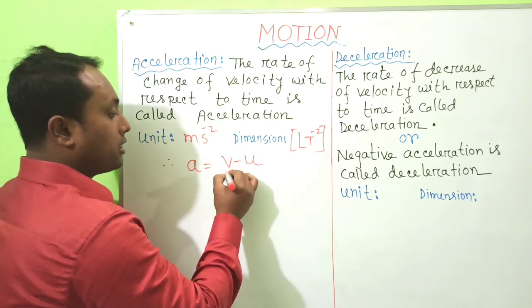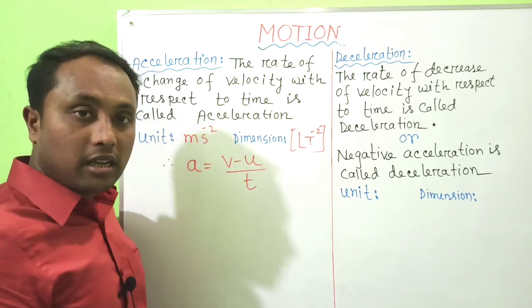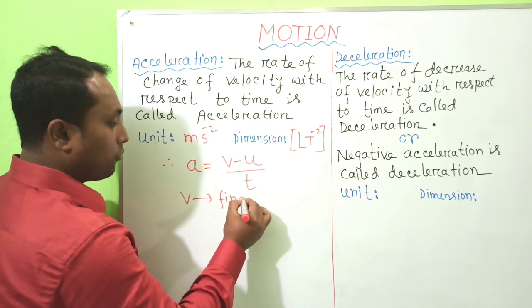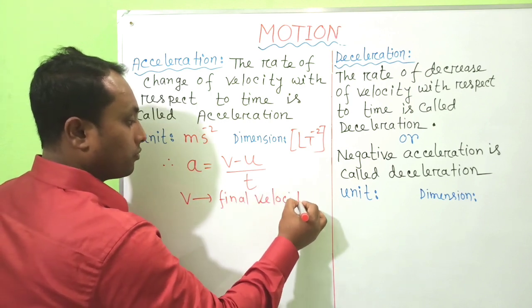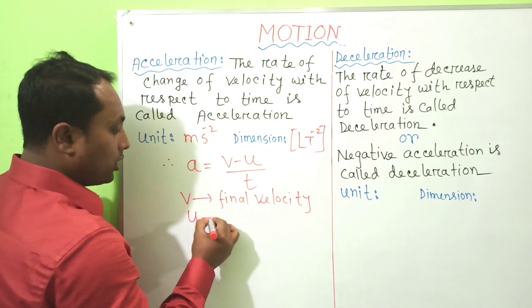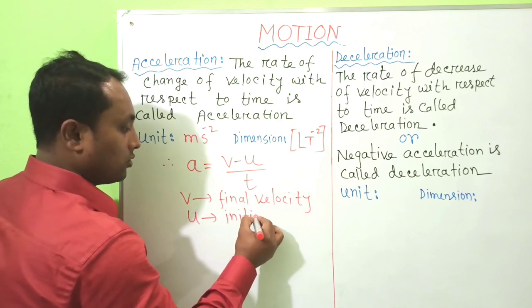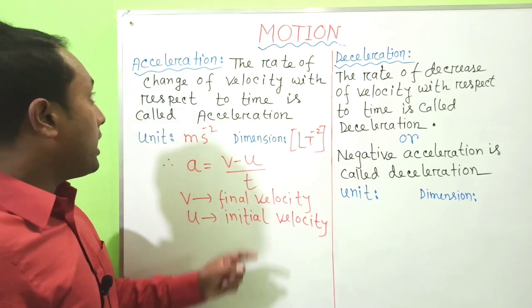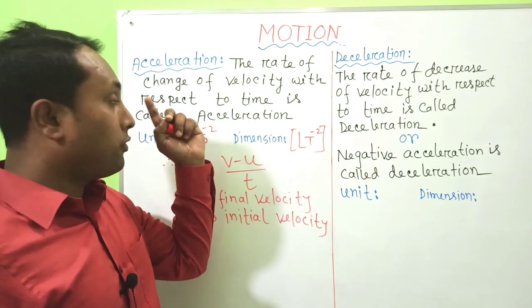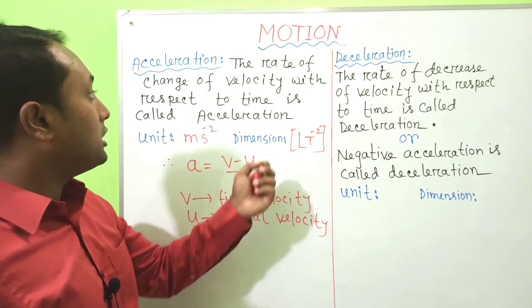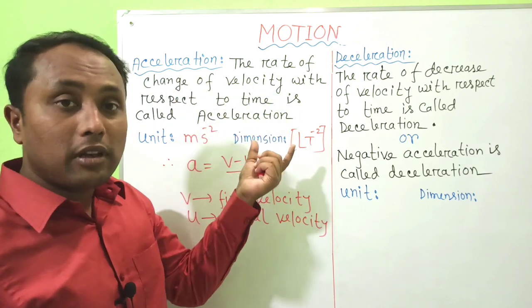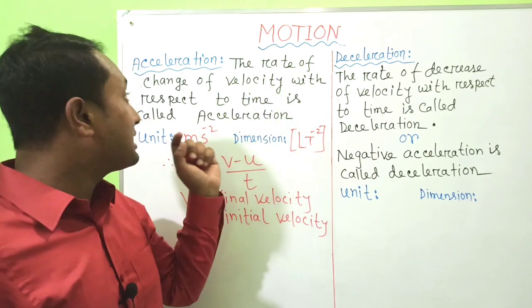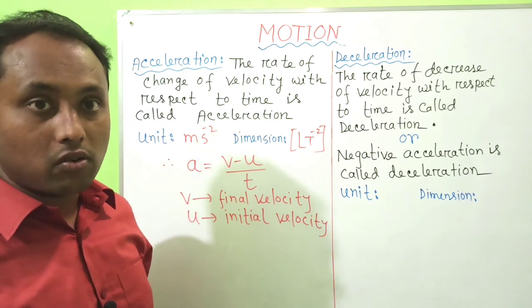Acceleration is denoted by 'a', and the equation of acceleration is a = (v − u) / t, where v is the final velocity and u is the initial velocity. Since velocity is a vector quantity, acceleration is also a vector quantity.